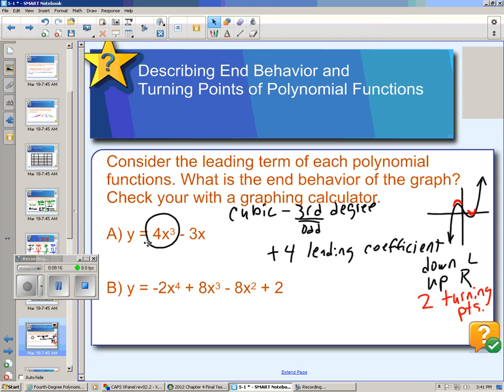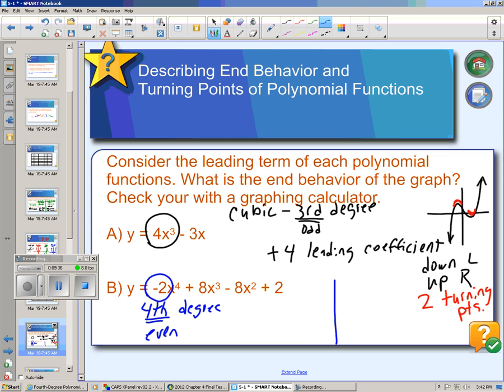For a second example here, this one is a fourth degree. Since four is even, we know both ends are going in the same direction. Our leading coefficient is negative two, so that means the two ends will be facing downward. So we might have a graph that looks something like this, but both ends will be going downward. And then the number of turning points would be one, two, three, three turning points.